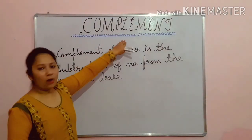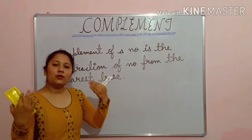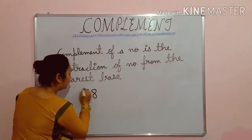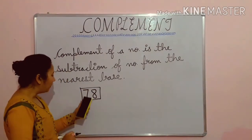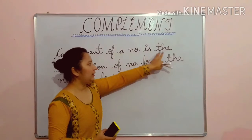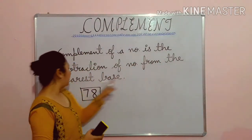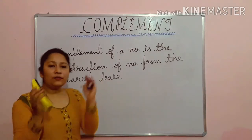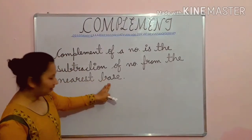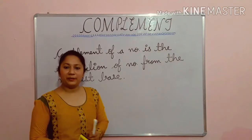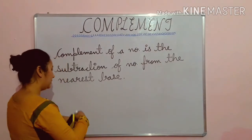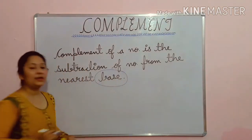Now students, Complement. Complement means you have to take the complement of a number. Like if I tell you your number is 78, then you have to find out the complement of 78. Complement of a number is the subtraction of the number from the nearest base. So if you want to find the complement of a number, you subtract it from its nearest base. But before understanding this statement, you should know what a base is.